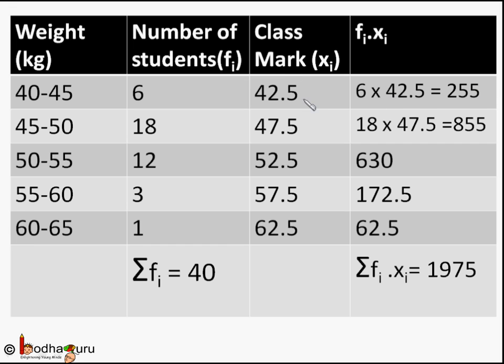42.5 represents the whole class, means x₁ = 42.5 kg. And we find the product of frequency f₁ and observation x₁, which will be equal to 6 × 42.5, which is equal to 255.